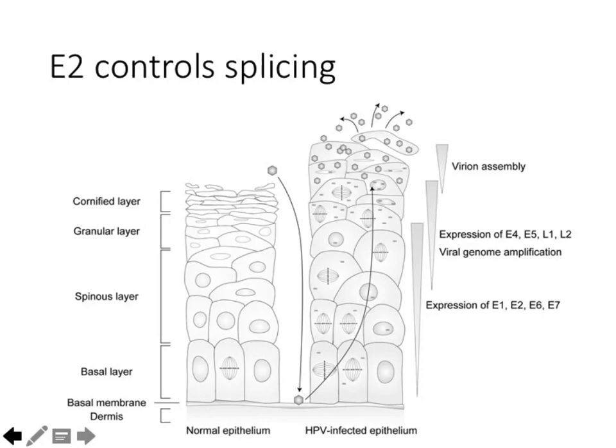That's the big theme, along with alternative splicing — that's what was covered on Monday. Today is transitioning to the rest of the biosynthesis process: how do we get the viral genome replicated early and then later on in the process?